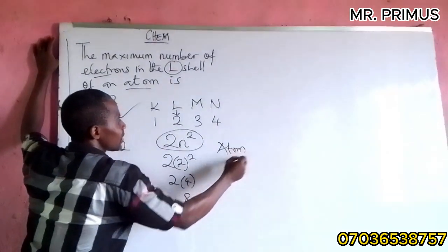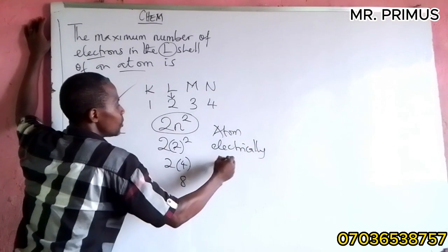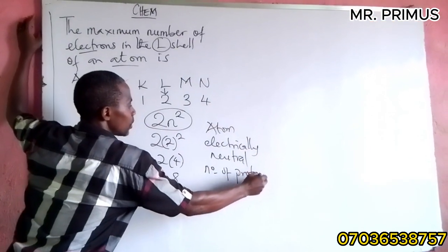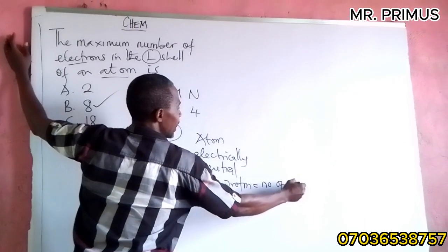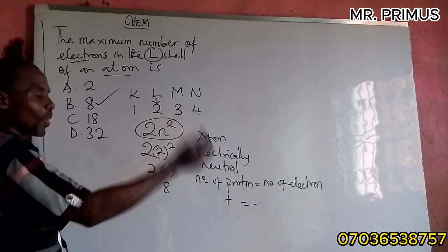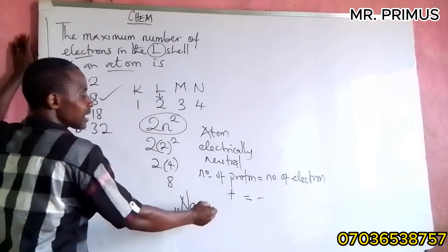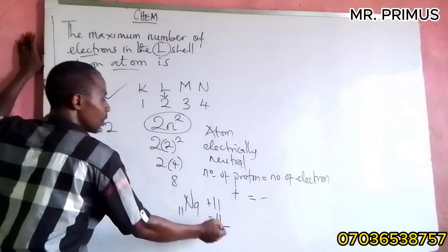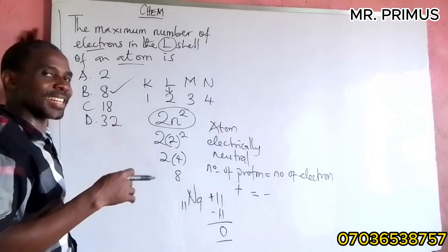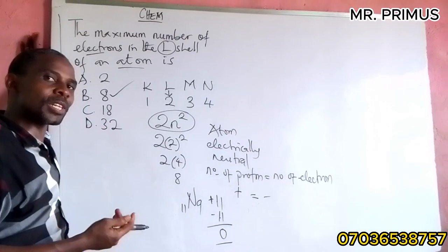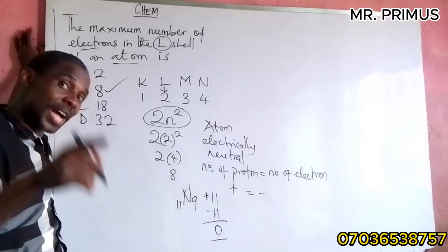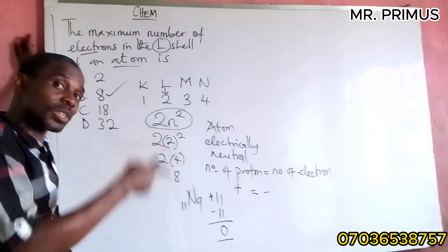We are looking for the L shell, so n = 2. Using the formula 2n²: 2 × (2²) = 2 × 4 = 8. So the maximum number of electrons in the L shell is 8. Anytime you are asked to find the number of electrons in a shell, don't forget to use this formula 2n².